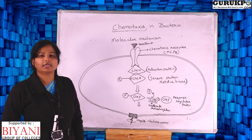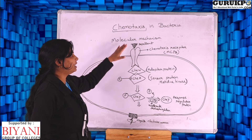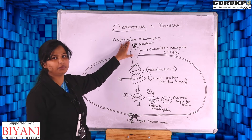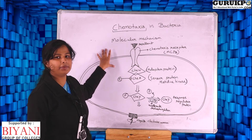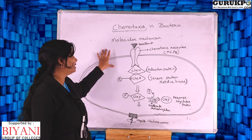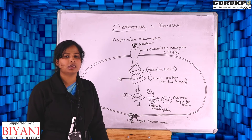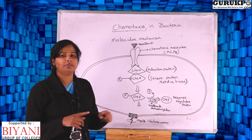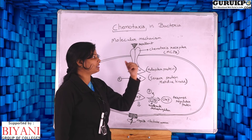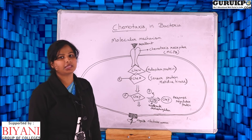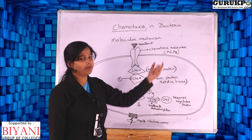Now, what is the molecular mechanism behind chemotaxis in bacterial cells? When a repellent molecule binds to the chemotaxis receptors present on the membrane of the bacterial cell, these chemotaxis receptors are transmembrane proteins, also known as methyl-accepting chemotaxis proteins — MCPs.